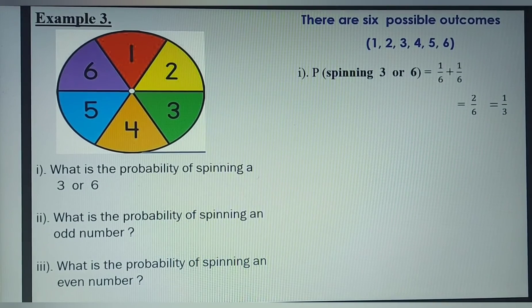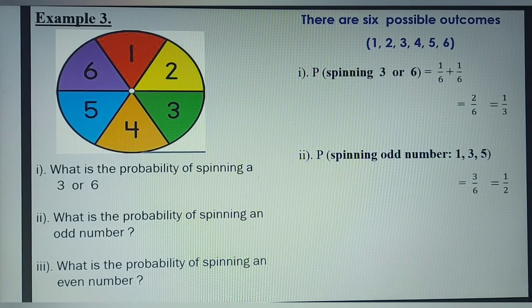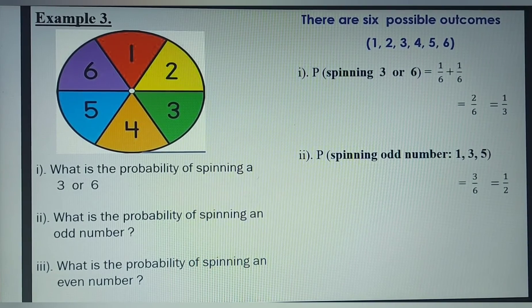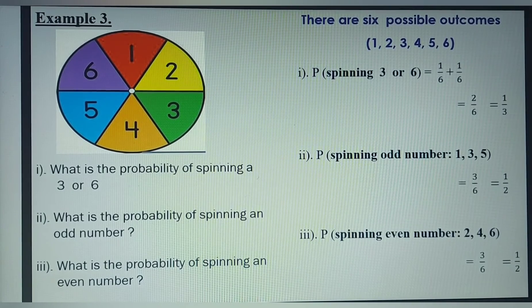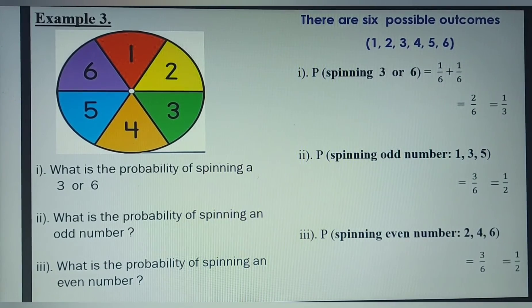What is the probability of spinning an odd number? The odd numbers on the spinner are 1, 3, and 5, so the number of ways possible is 3 divided by 6, giving 1 over 2. What is the probability of spinning an even number? The even numbers are 2, 4, and 6, so the number of ways possible is also 3 divided by 6, which gives 1 over 2.